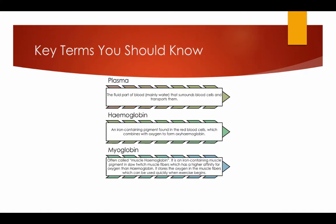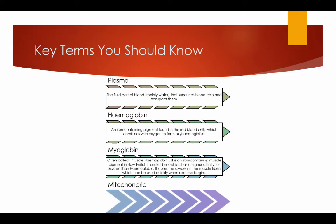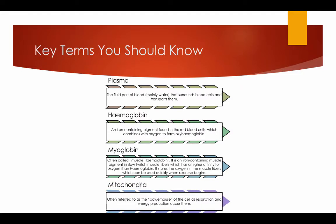Myoglobin: often called the muscle haemoglobin. It is an iron-containing muscle pigment in slow twitch muscle fibres which has a higher affinity for oxygen than haemoglobin. It stores the oxygen in the muscle fibres which can be used quickly when exercise begins. Mitochondria: often referred to as the powerhouse of the cell, as respiration and energy production occur there.